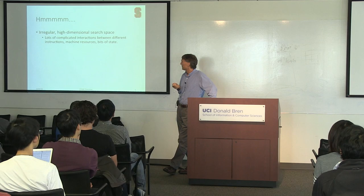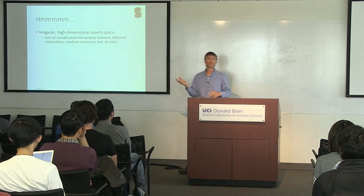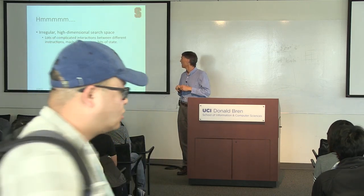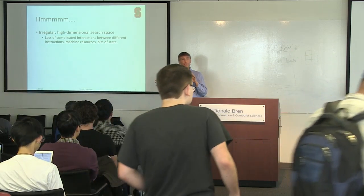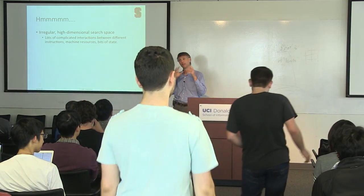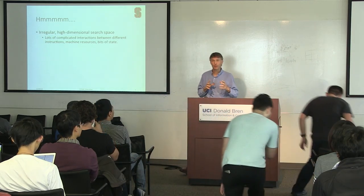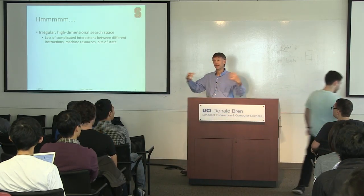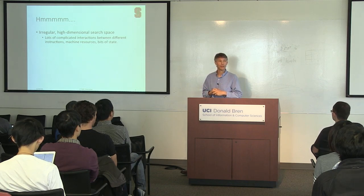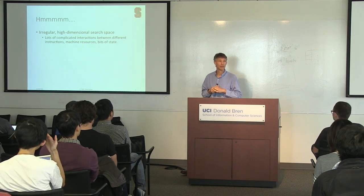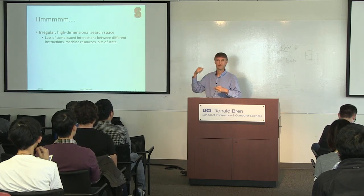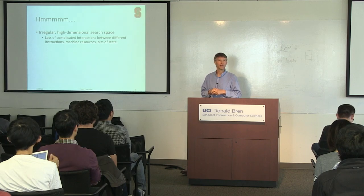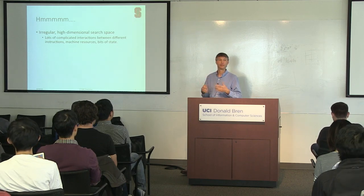There are lots of complicated interactions between all the different pieces — the different instructions, the bits of the machine, the machine resources. That's one of the reasons people have built compilers the way they have: they take little bits of the problem that you can break off and solve nicely and independently, then compose all those pieces together in a bag-of-tricks architecture — register allocation, dead code elimination, and so on. Pull a trick out of the bag, see if it does anything good, then try the next one.